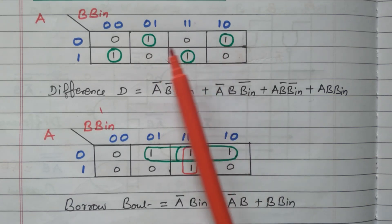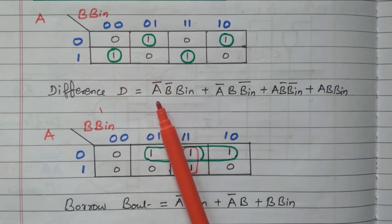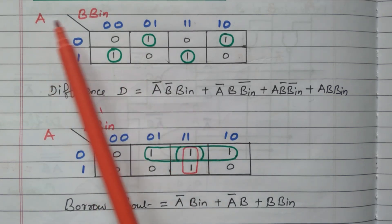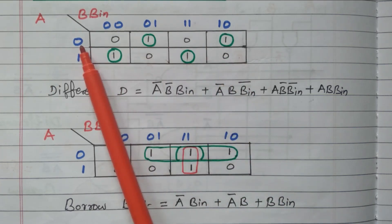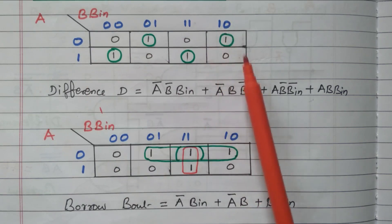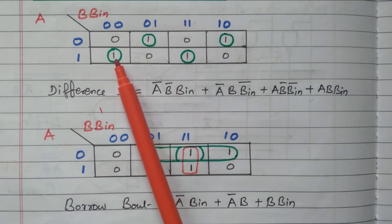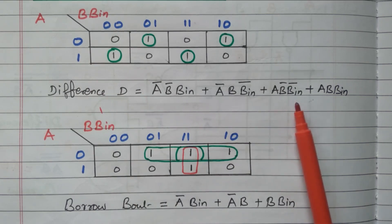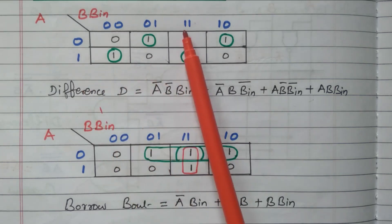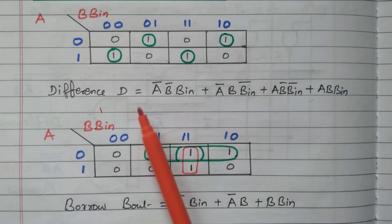We identify the expression for each of the four 1s one by one. The first term (row 0, column 0 0 1) gives A-bar B-bar B_in. The second term (row 0, column 0 1 0) gives A-bar B B_in-bar. The third term (row 1, column 0 0) gives A B-bar B_in-bar. The fourth term (row 1, column 1 1 1) gives A B B_in. This is the expression for difference.